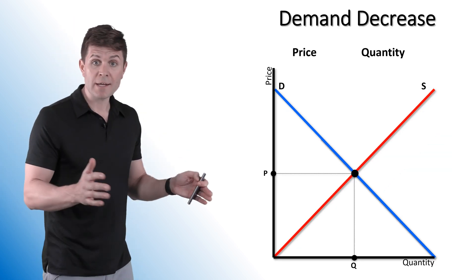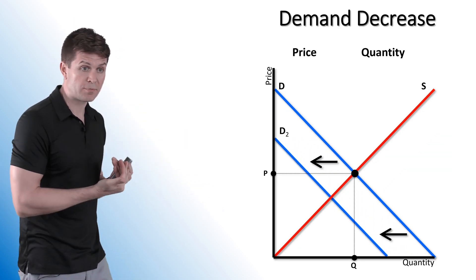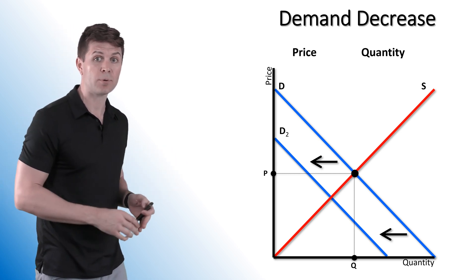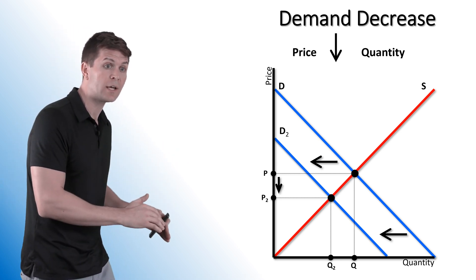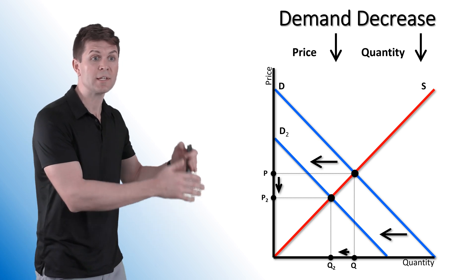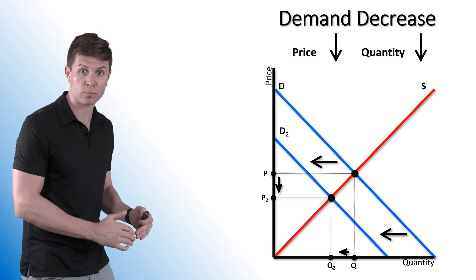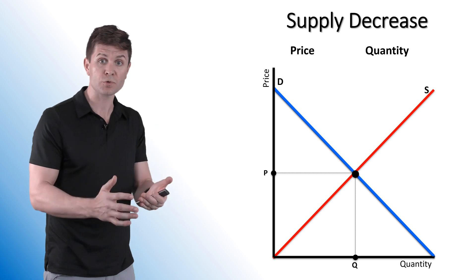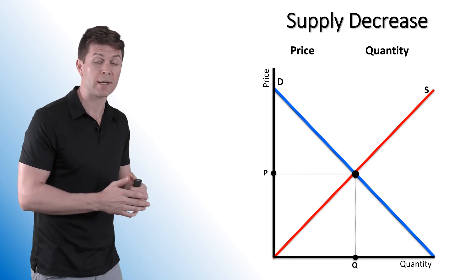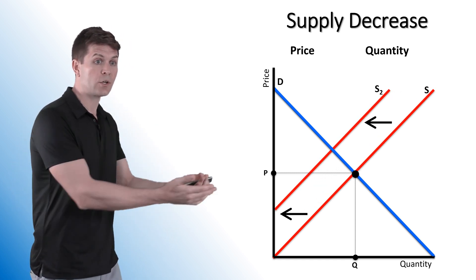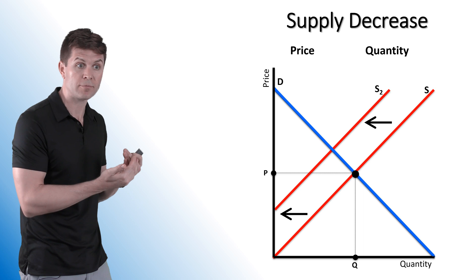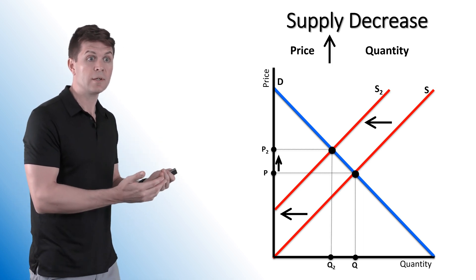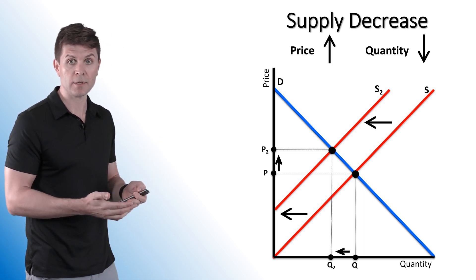With a demand decrease, we're going to see the demand curve shift to the left — fewer consumers are willing to buy the product at every price level. This is going to cause price to go down and quantity to go down as well. With a supply decrease, fewer producers are willing to offer the product at every price level, causing the supply curve to shift to the left. This is going to result in a higher price and a lower quantity in the market.